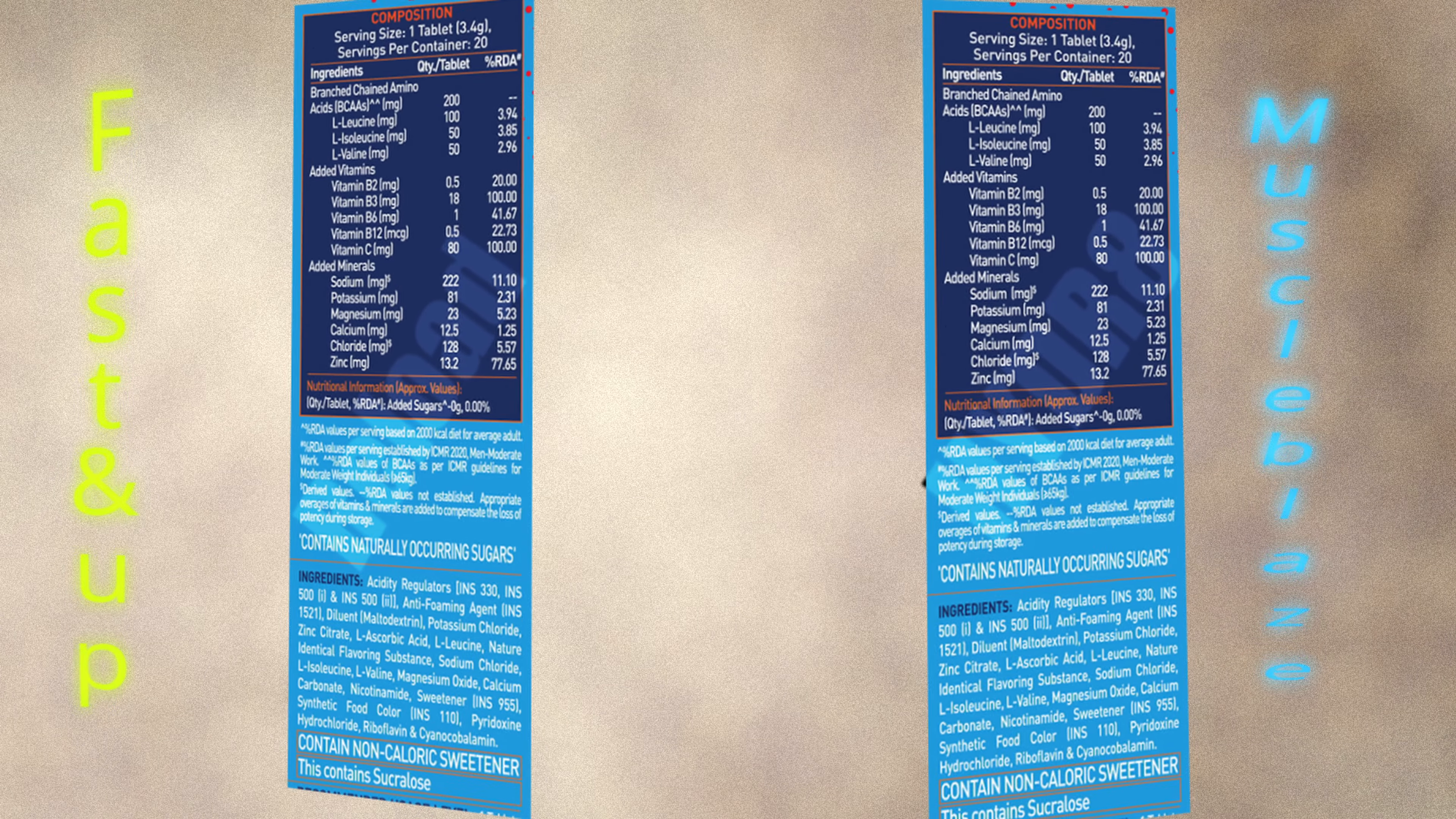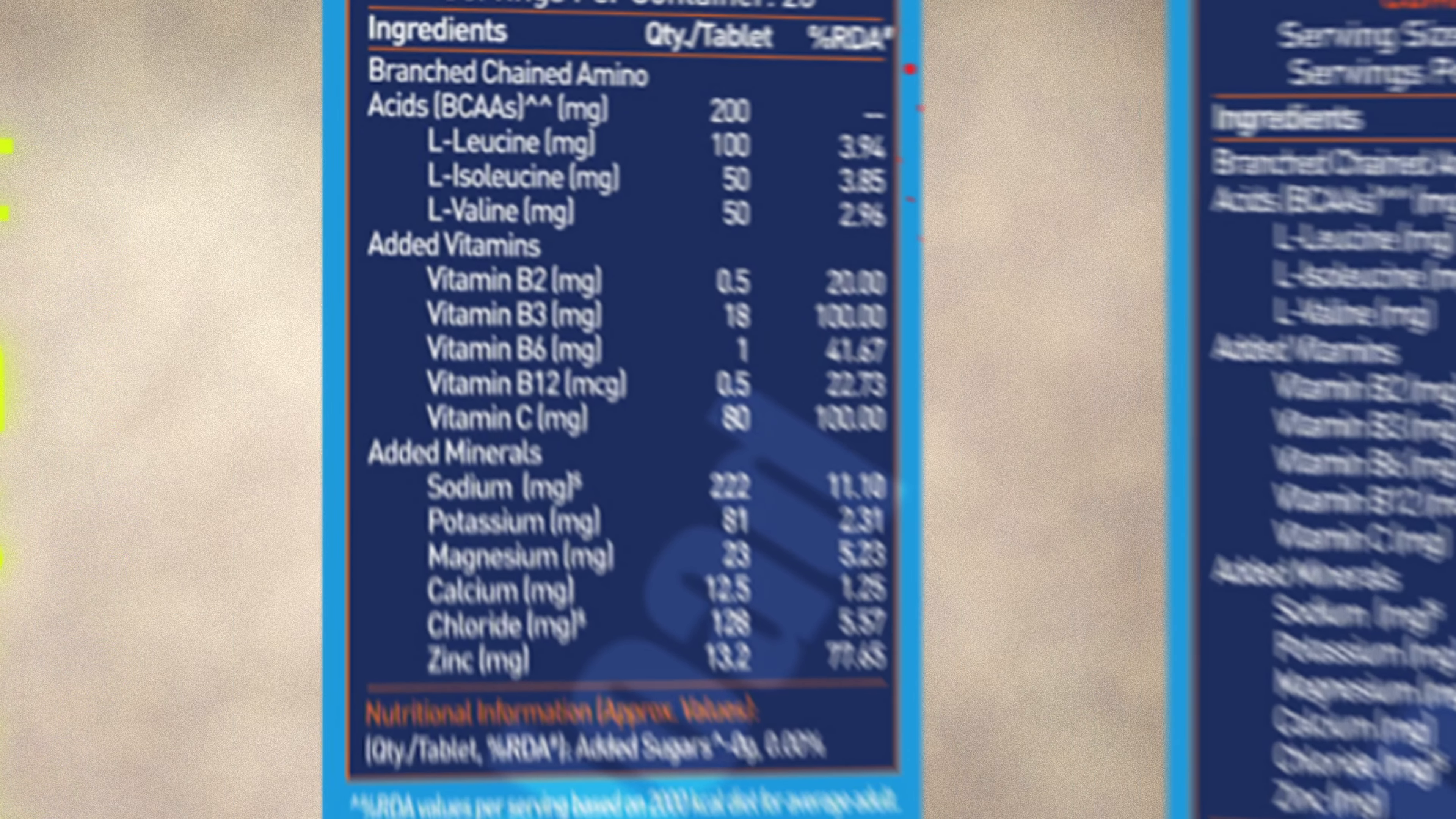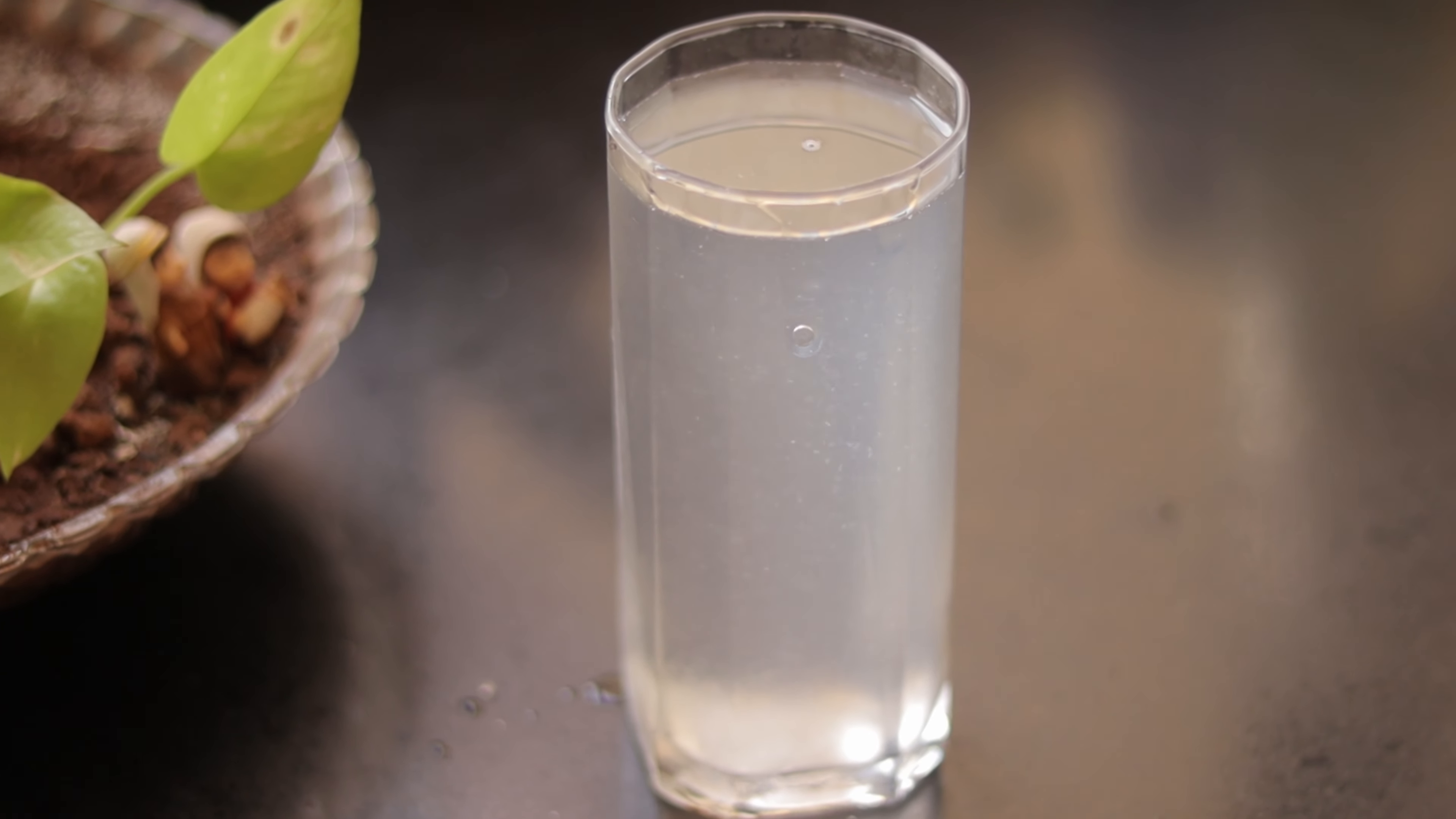With this in mind, let's look at the ingredient list of each of these two products. Both Fast Up and Muscle Blaze Hydrate have got a similar profile of electrolytes providing sodium, potassium, chlorides, calcium and magnesium. Although our lime water would probably provide more sodium chloride.